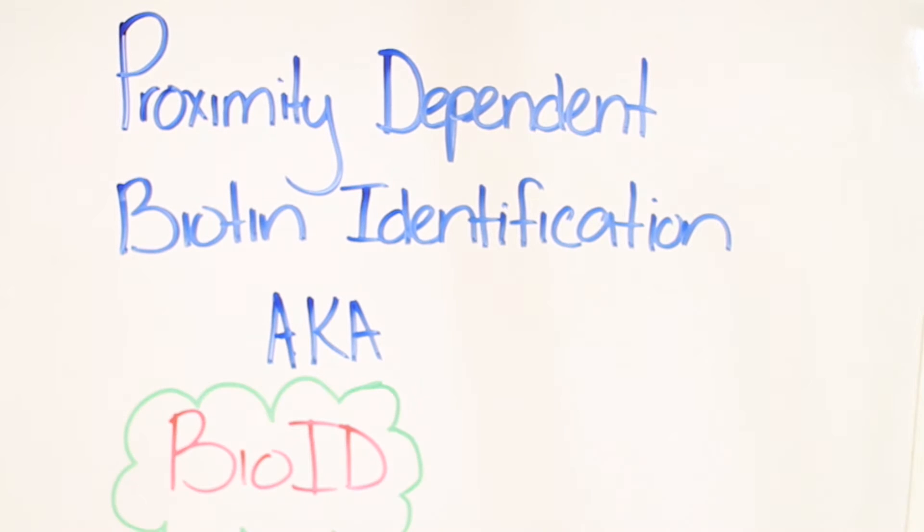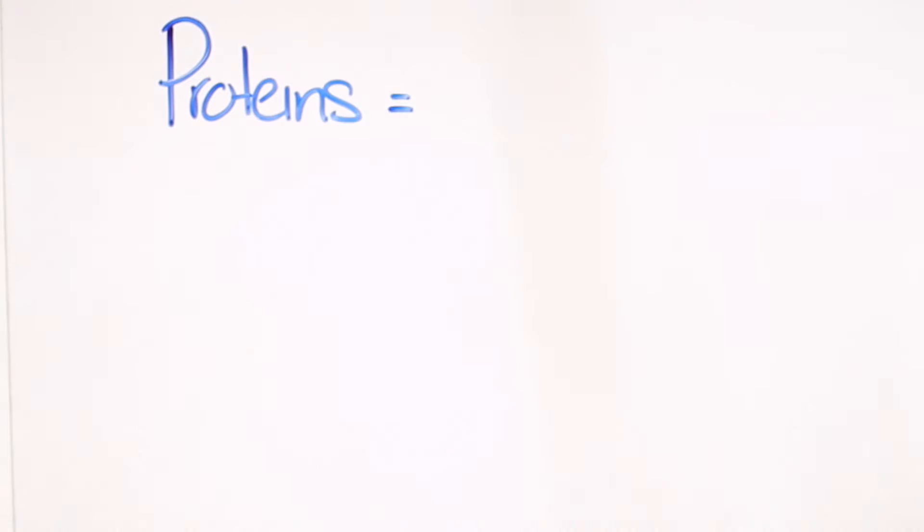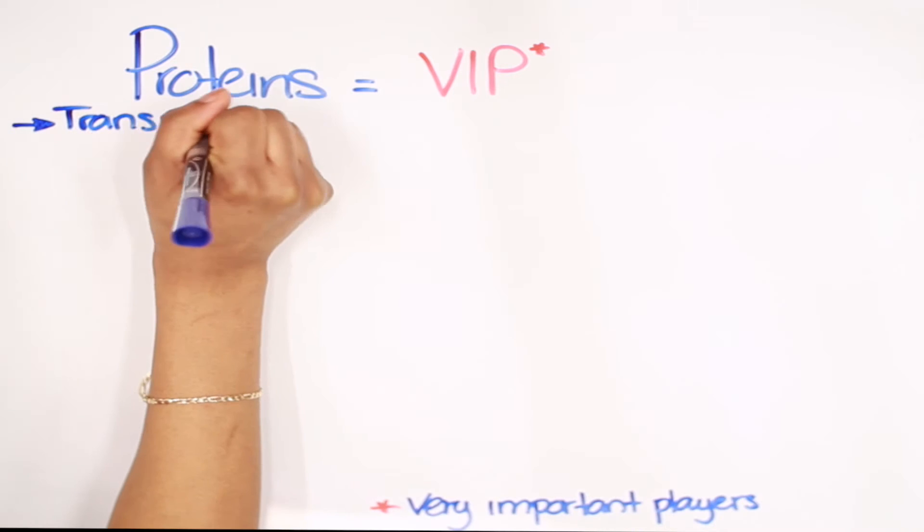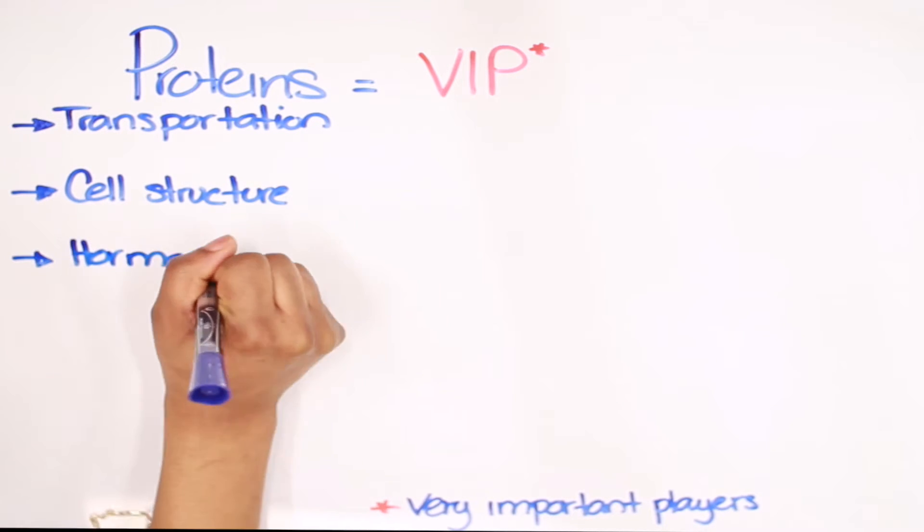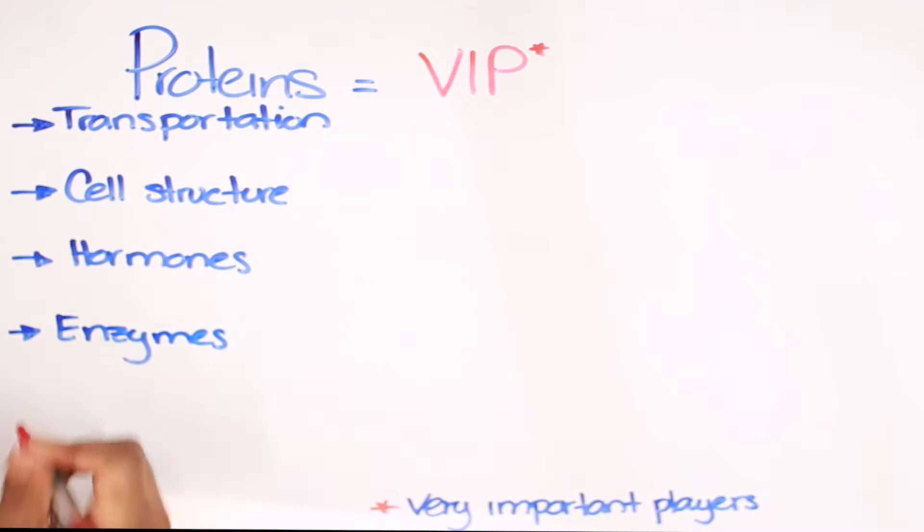But first, let's talk a little bit about protein interactions in general. As you probably know, proteins are macromolecules that play an enormous role in living organisms. Their functions span from transportation to cell structure, hormones, enzymes, and many others that I won't have the time to name. Basically, life depends on proteins. But for proteins to do their jobs, they need to interact with many other things, including other proteins like themselves.